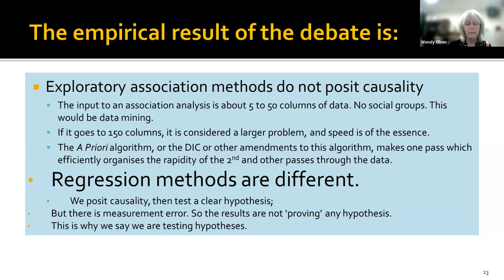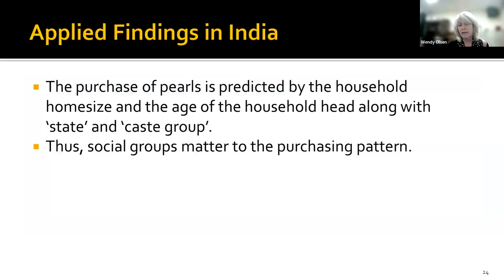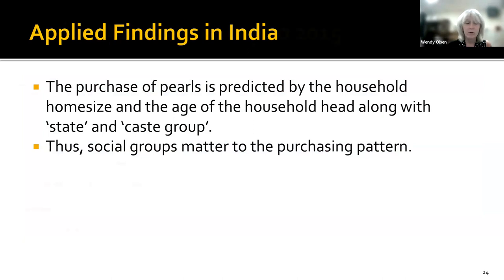Regression methods are different. We posit causality, then test a hypothesis. But we know there is measurement error, or the model might be the wrong model, so the results are not proving the hypothesis. Both schools of thought are very cautious, and both really should be saying that we're testing hypotheses and not proving them. The methods used are very different. To go back to my India example, you can study the purchase of pearls and how it's predicted by household size and age — older people are more likely to buy pearls and give them as a gift to young people at the time of weddings. So social groups matter to the purchasing system.